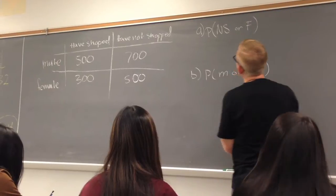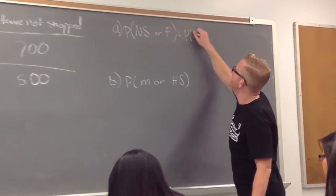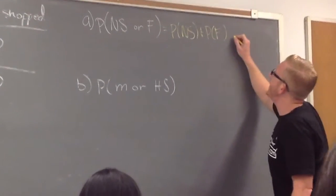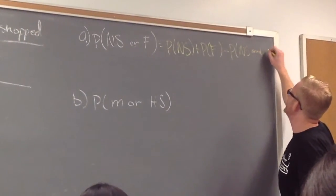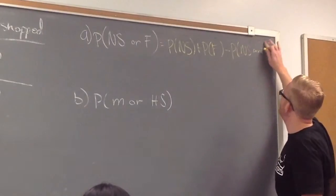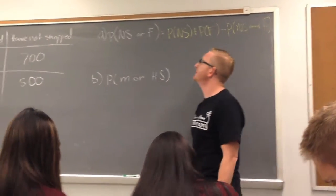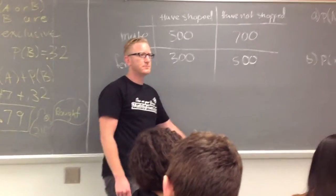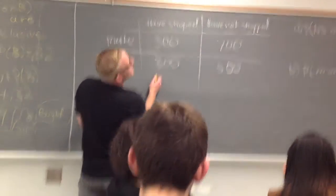So we're looking for the probability of not shopped or female. That's the probability of not shopped, plus the probability of female, minus the probability of not shopped and female. Oh boy! So now we have to recall how we find these probabilities from the contingency table. How do we find the probability of not shopped? Those are our marginal probabilities.